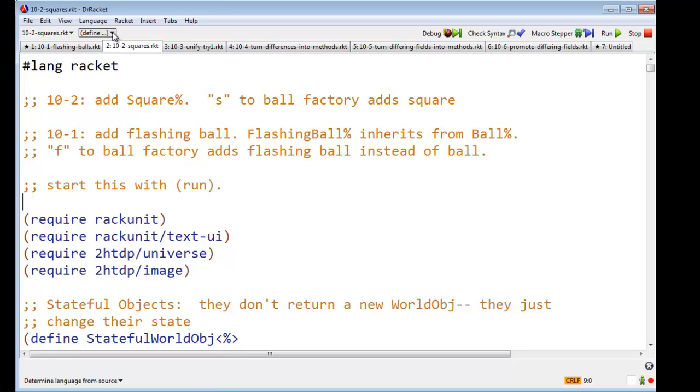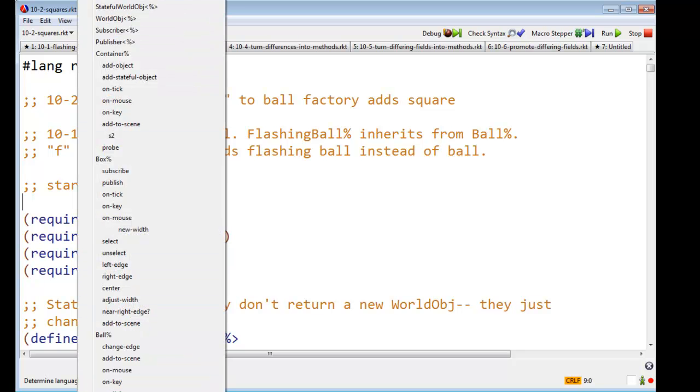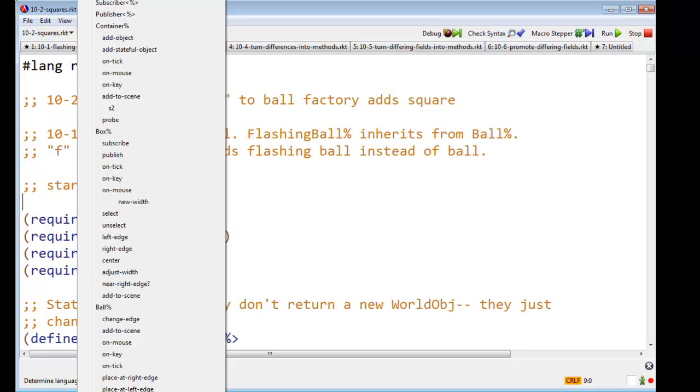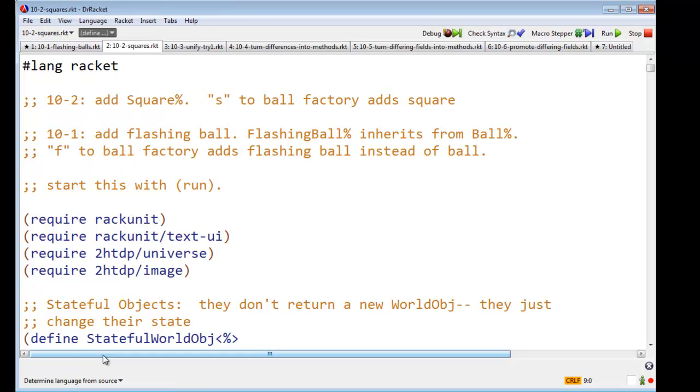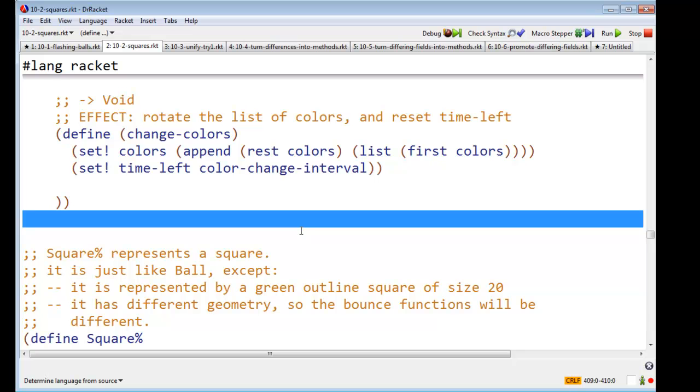So let's go look at squares. A square is like a ball, except that it is represented by a green outline square of size 20, and it has different geometry, which means that all the functions about bouncing are going to be different.